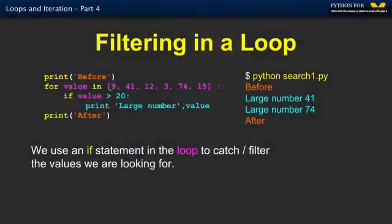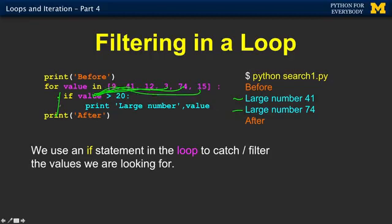Filtering is the idea that we're looking for something that meets some criterion. We go through and look at all the things in the loop, and we're trying to figure out if something is greater than 20, and we're going to declare that a large number. This is how you put an if statement in a loop. Sometimes this loop will do nothing, sometimes it will print out 'large number.' Value's nine — that's false, so it does nothing. Value's 41 — that's true, so it prints. Value's 12, does nothing. Value's three, does nothing. Value's 74, prints. Value's 15, false, done.